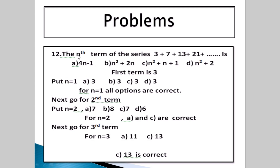Next: the nth term of the series 3 plus 7 plus 13 plus 21 plus dash. The options are: 4n minus 1; n squared minus 2n; n squared plus n minus 1; or n squared minus 2.